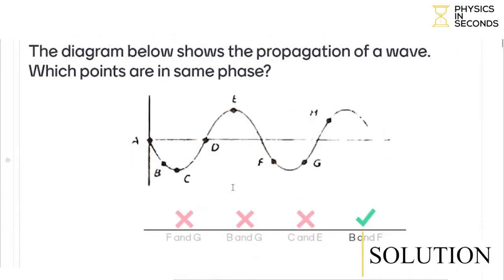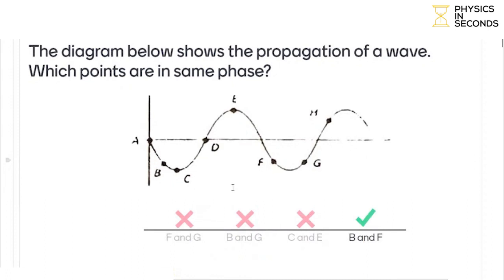The diagram below shows the propagation of a wave — which points are in the same phase? In a transverse wave, every two points separated by a distance lambda are in phase. If you look at this wave, point B and point F — the distance between them is lambda, which is one full period. So point B and F are in phase.